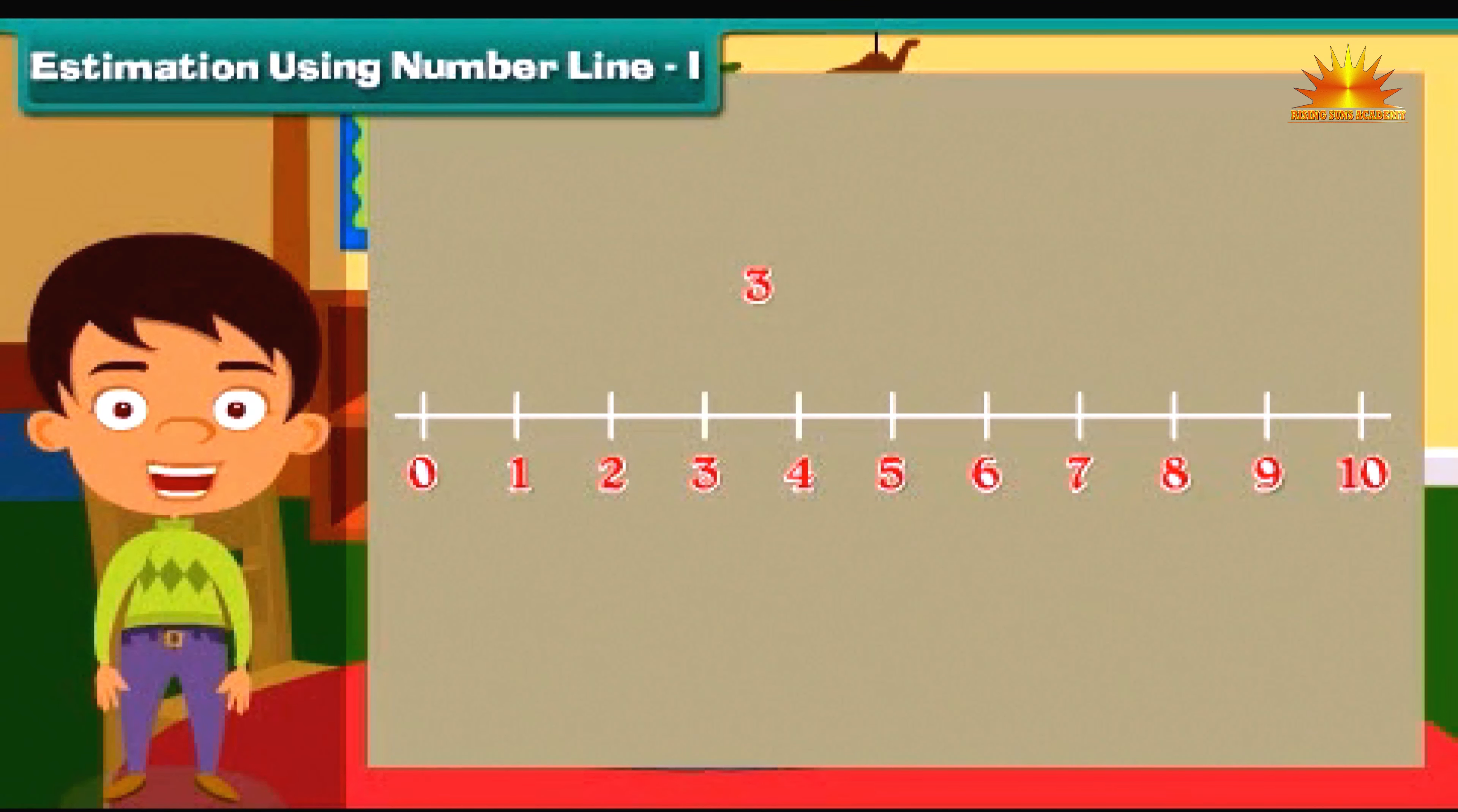Let us add three and six. By adding three and six, we get nine, and the position of nine will be near to ten.